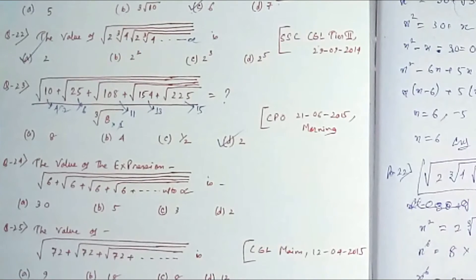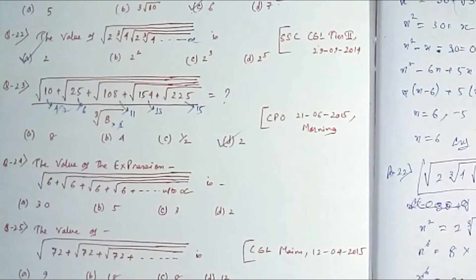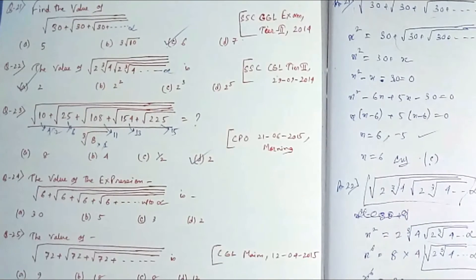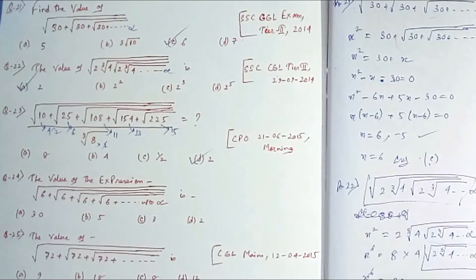Let's move to question number 24: find the value of √(6+√(6+√(6+...))) up to infinity. This is quite similar to question 21. Please pause and try it yourself. The options are: option A is 30, option B is 5, option C is 3, and option D is 2.